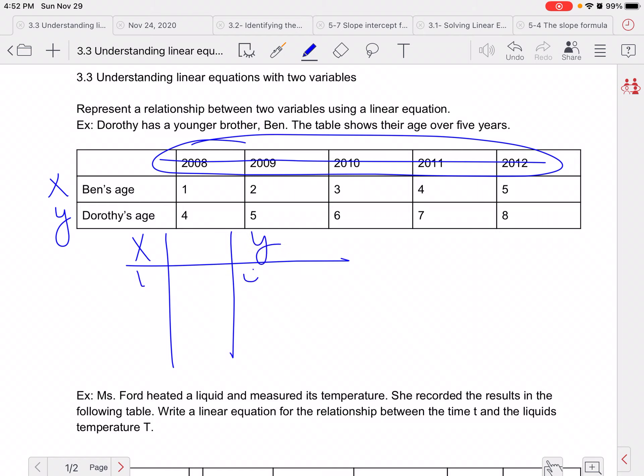So when Ben is one, Dorothy is four. When Ben is two, we get Dorothy is five. When we get three, we get six, so on and so forth. Now some of you might see this pattern right away, and that's great, but sometimes certain ones are harder than others.